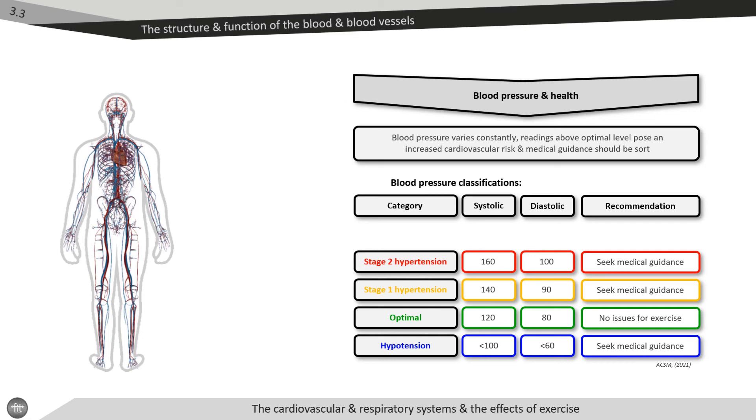These individuals need to exercise under specialist instructor supervision. Individuals over 180 over 100 are classified as stage three hypertensive and are totally contraindicated for exercise due to the high risk of acute cardiovascular event. Exercise for these individuals will be completed in a clinical environment with medically supervised professionals.